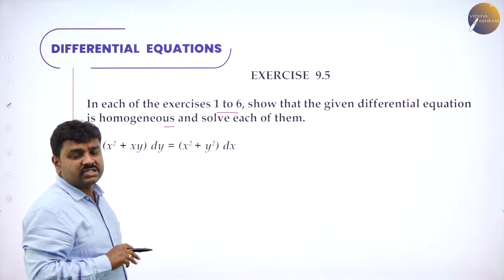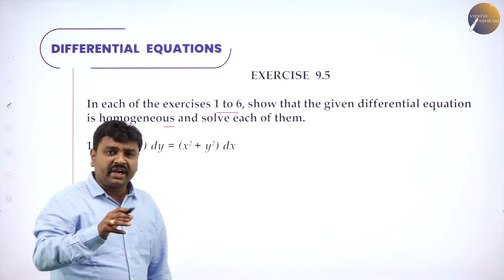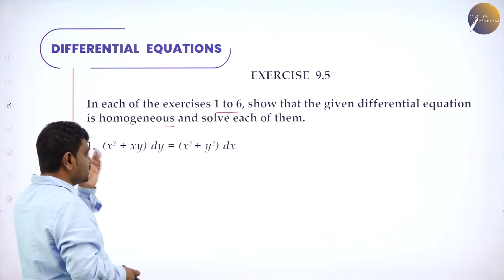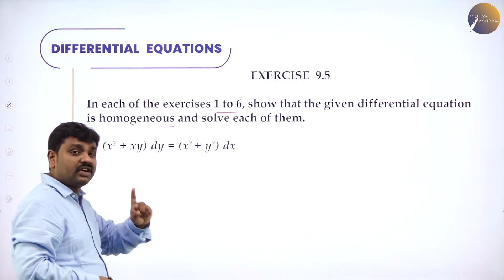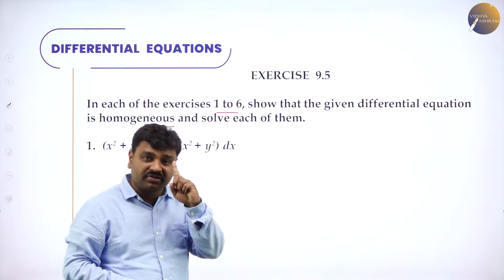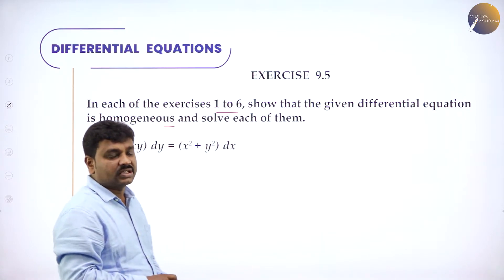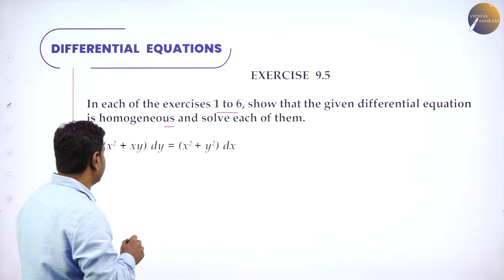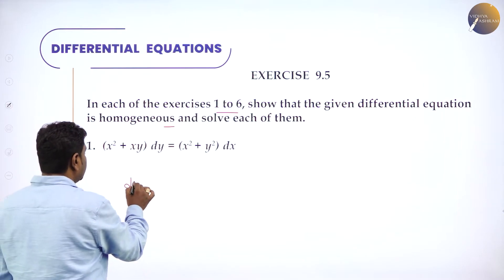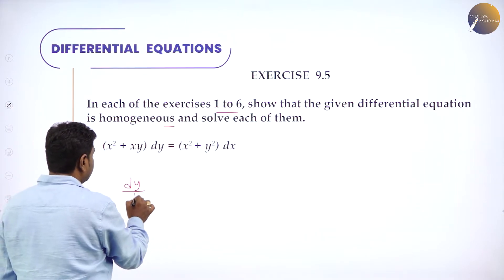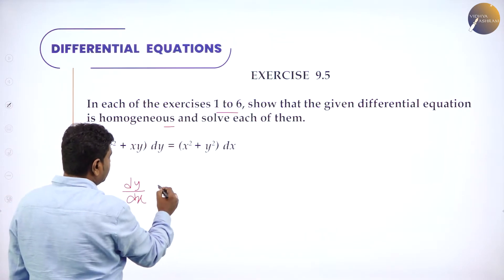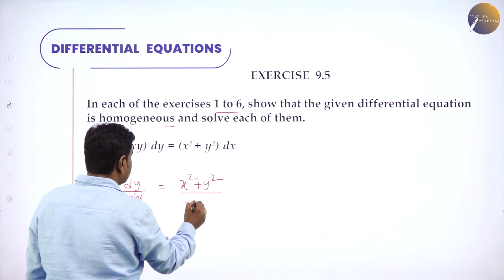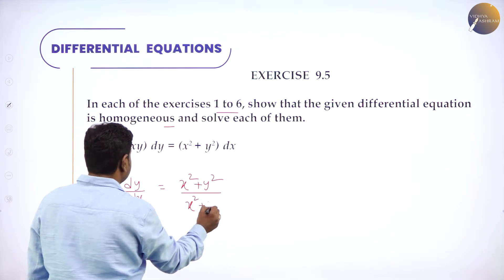How to prove homogeneous? Make dy/dx the subject. Once you make dy/dx the subject, if the degree of the numerator and the degree of the denominator is the same, then we say homogeneous. Or each term should have the same degree — another way of saying it. So now dy/dx equals x-squared plus y-squared divided by x-squared plus xy.